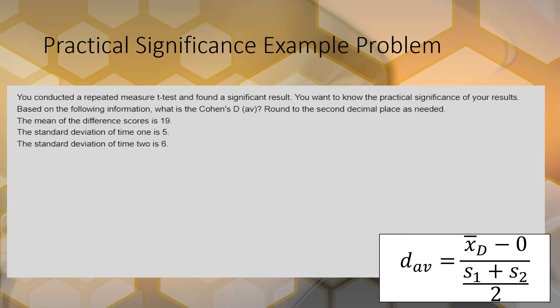So here we have d_av equals 19, and it's the mean of the difference scores minus 0. But we don't really need that - it's just from the null.